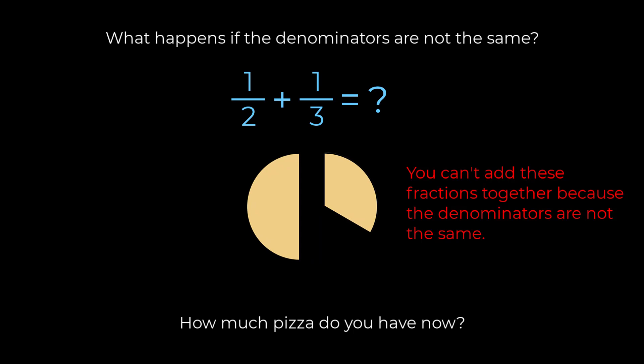Suppose though that instead of saying that you started with one half of a pizza, I told you that you have three sixths of a pizza. It's the same amount of pizza, just cut into more slices. And suppose that instead of me giving you one third of a pizza, I gave you two sixths of a pizza.